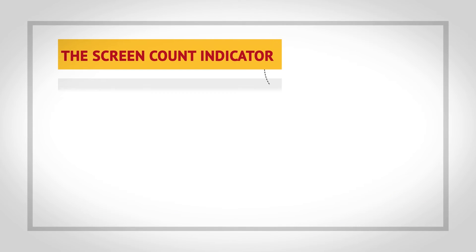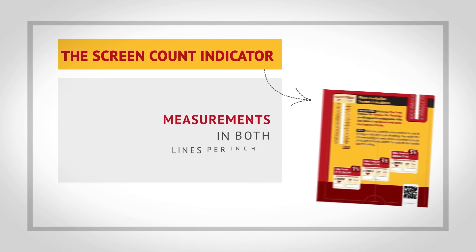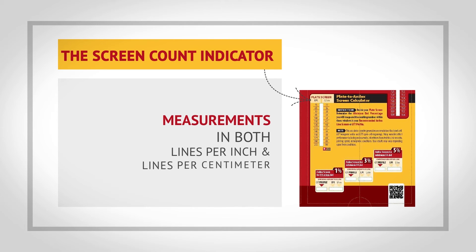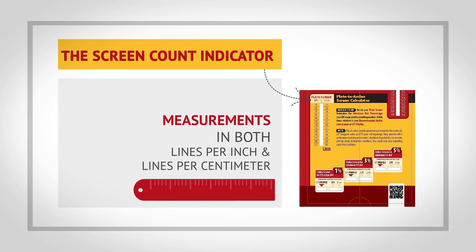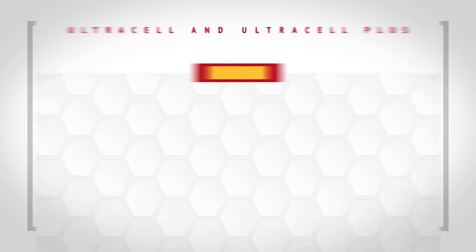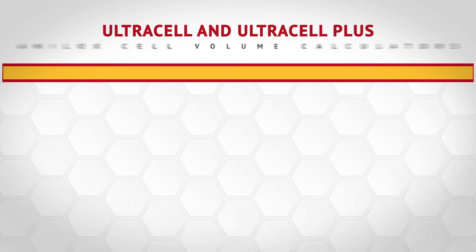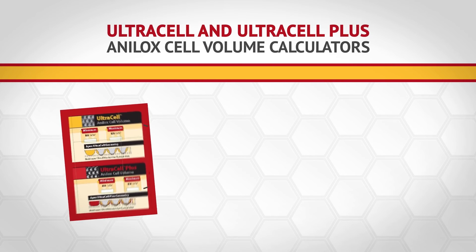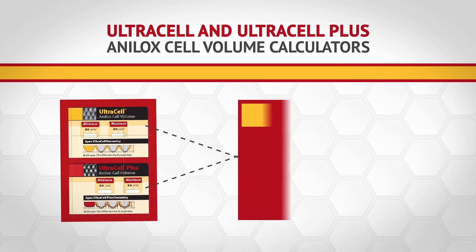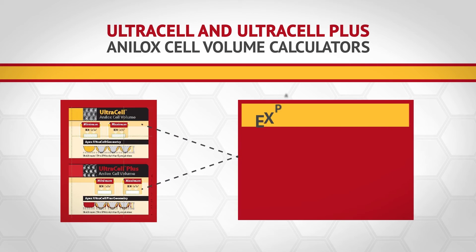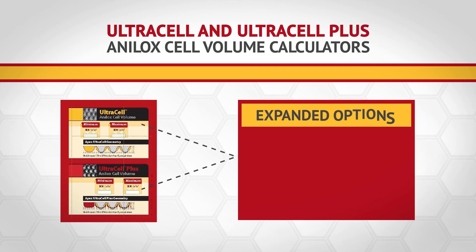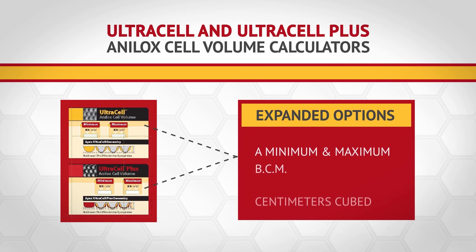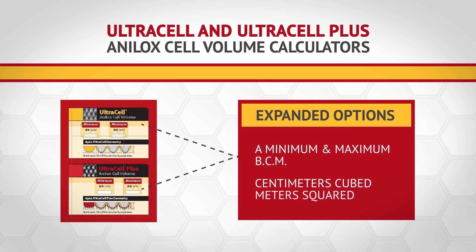The screen count indicator provides measurements in both lines per inch and lines per centimeter. Our ultra-cell and ultra-cell plus analog cell volume calculators have been improved with expanded options, providing a minimum and maximum BCM and centimeters cubed per meters squared.